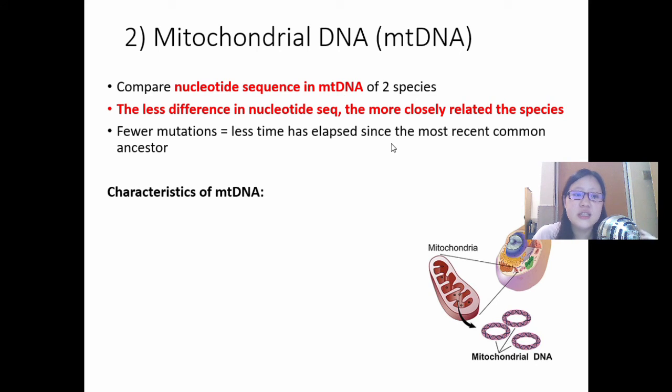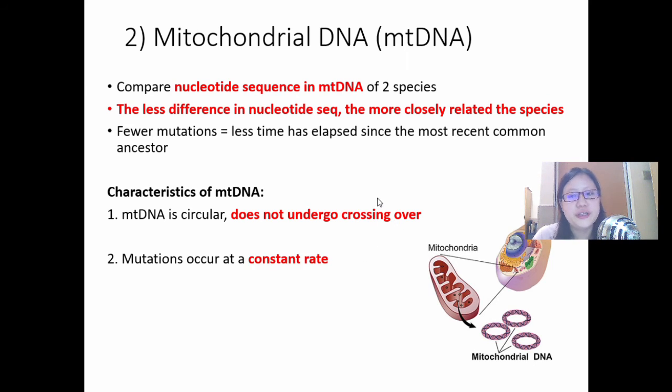Well, mitochondrial DNA actually has a few special characteristics, and this is what you need to know. Number one, it's circular, and it's in the mitochondria, so it does not undergo crossing over in the same way that the nuclear DNA does. Mutations occur at a relatively constant rate across different organisms, and can act as a molecular clock. If you detect more differences, it means more mutations have occurred, means more time has passed. It's a molecule that shows time. Therefore, molecular clock is a nickname that scientists have given it.